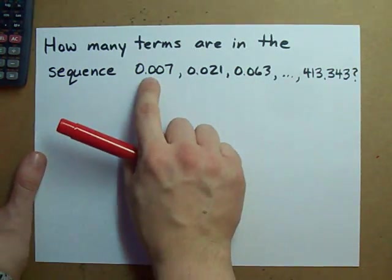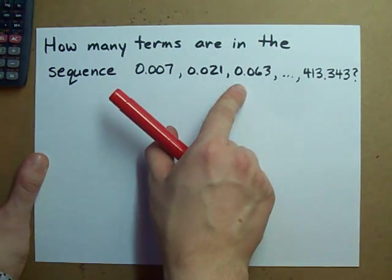I know it's geometric because my value is tripling each time.